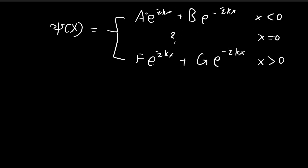Recall that last time we could get rid of one of the exponential terms by requiring the function to be normalizable as x tends to positive or negative infinity. But for this scattering state expression, it is not normalizable in the usual sense — you would need to use a Fourier transform, as we did for the free particle. So we can't use that argument here, and we're left with all four unknowns: A, B, F, and G.